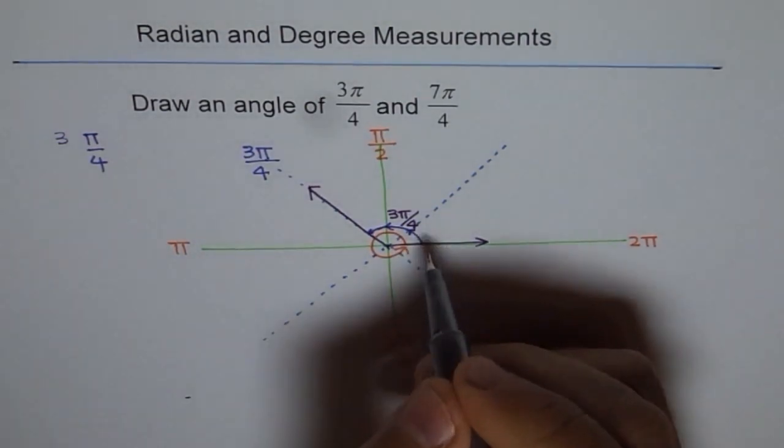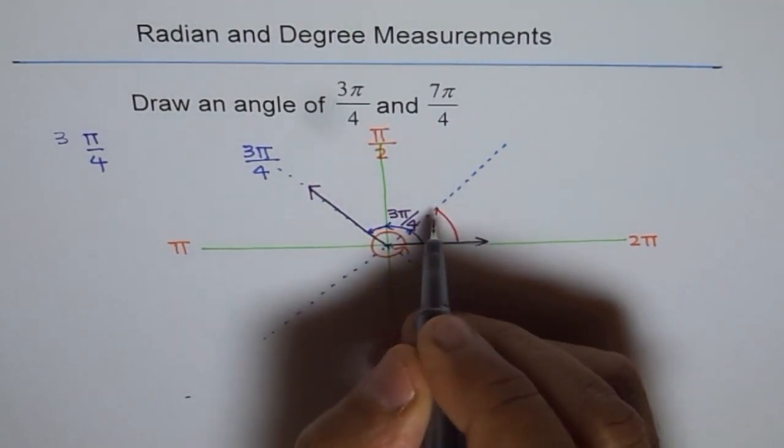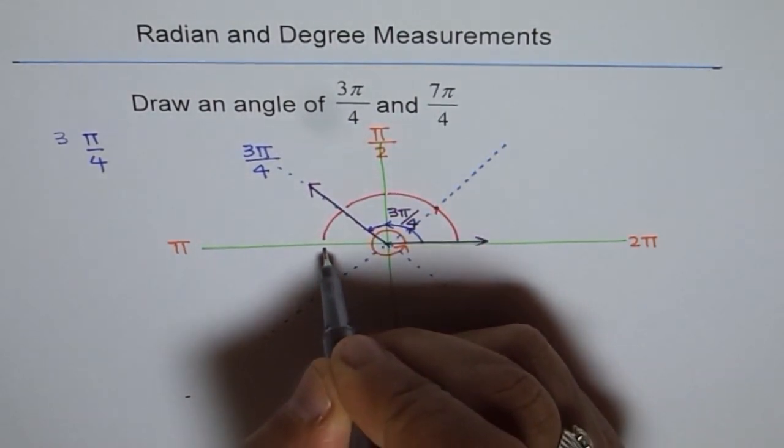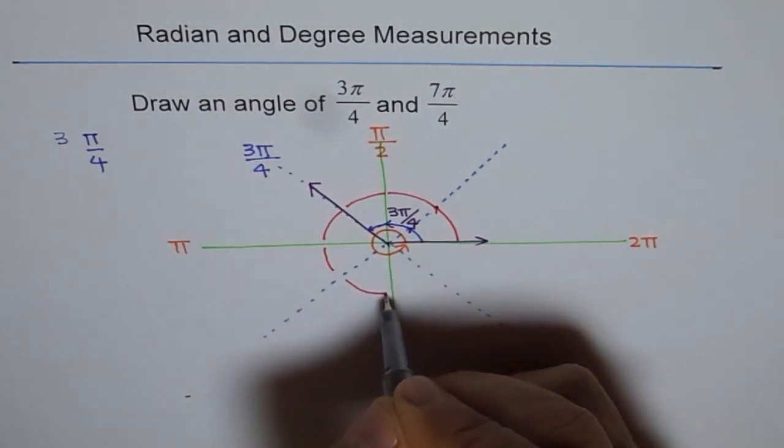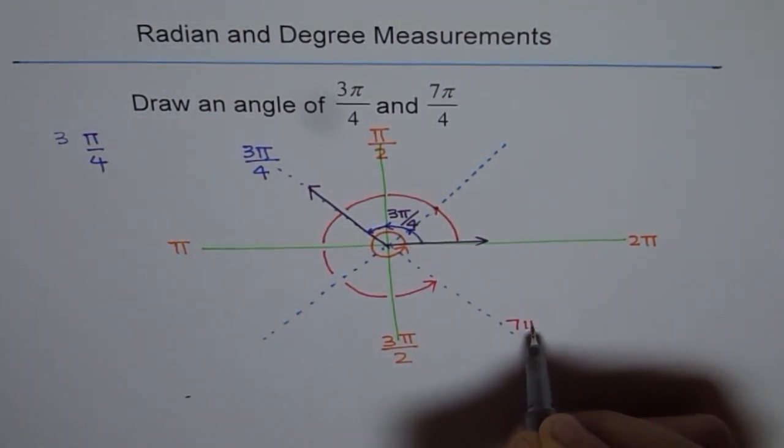And now can you tell me where is 7π/4? So a simple counting. We will go from here. We will make bigger 1 this time. 1, this is 1 π/4. Let me not draw arrows here. 2, 3, 4, 5, 6. And that is 7π/4. Do you see that? So this is my 7π/4.